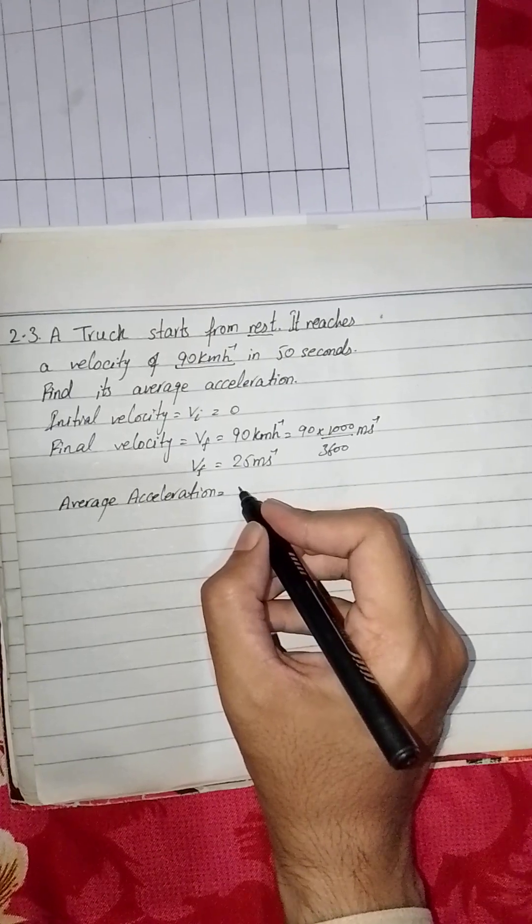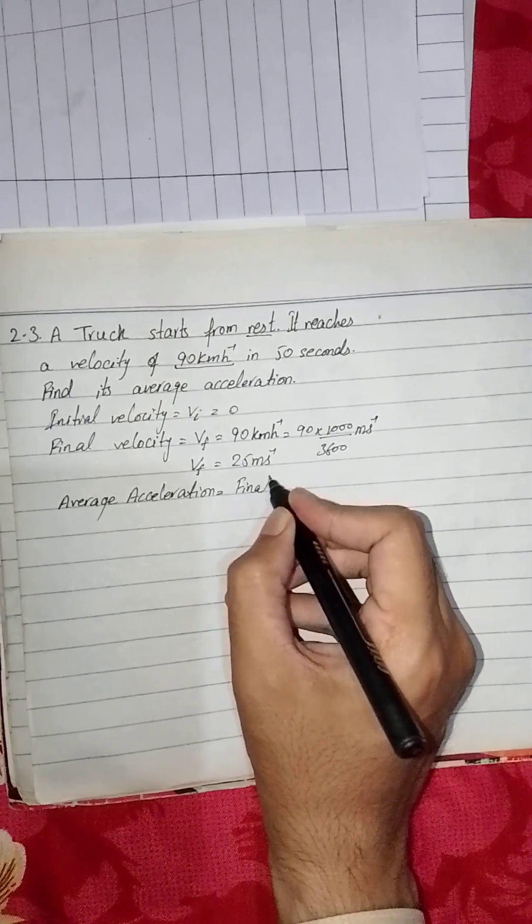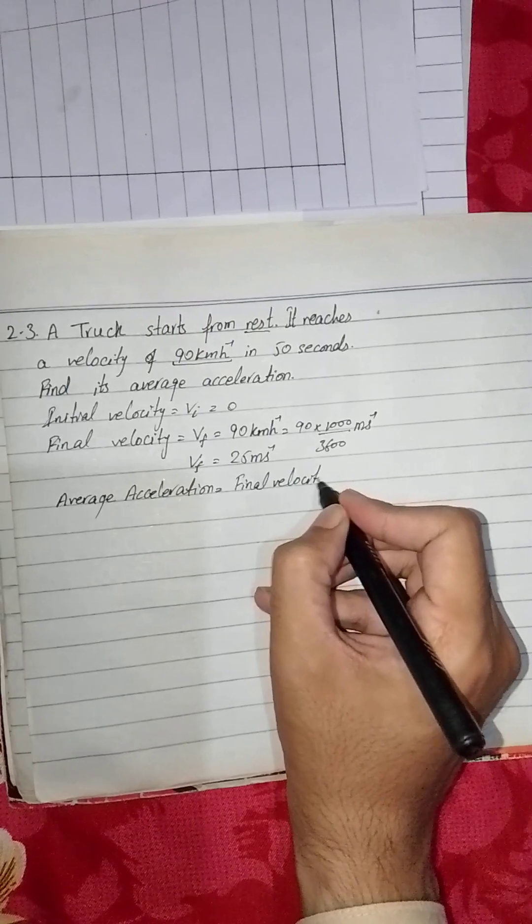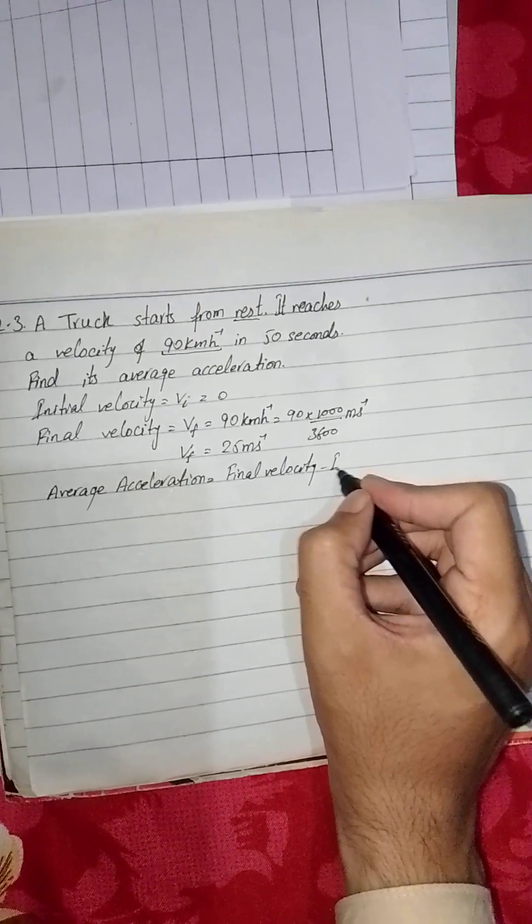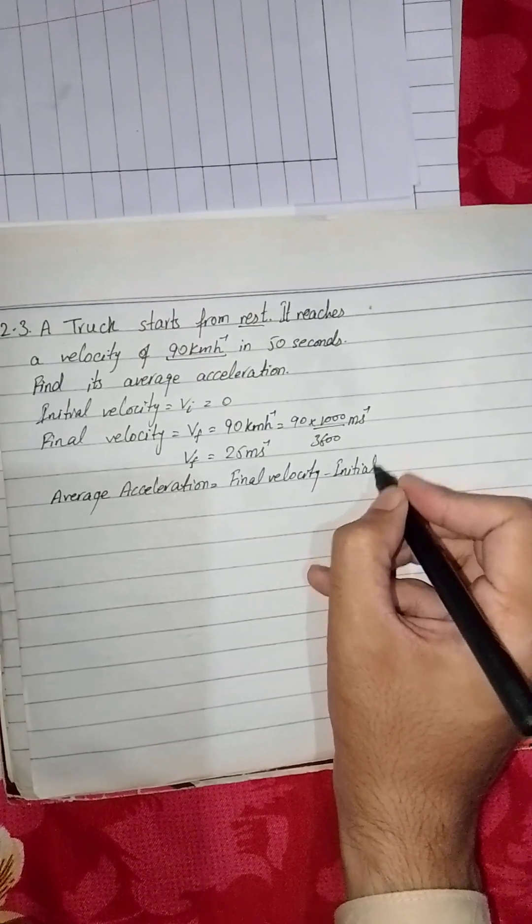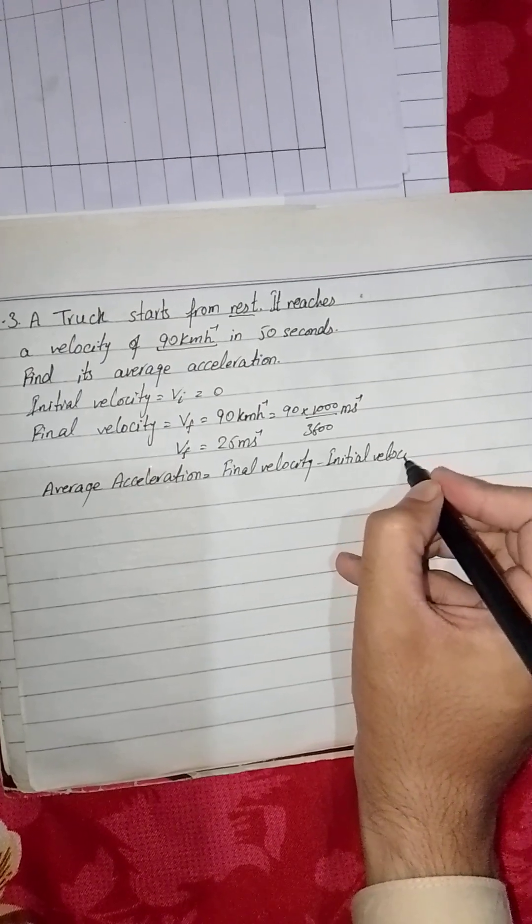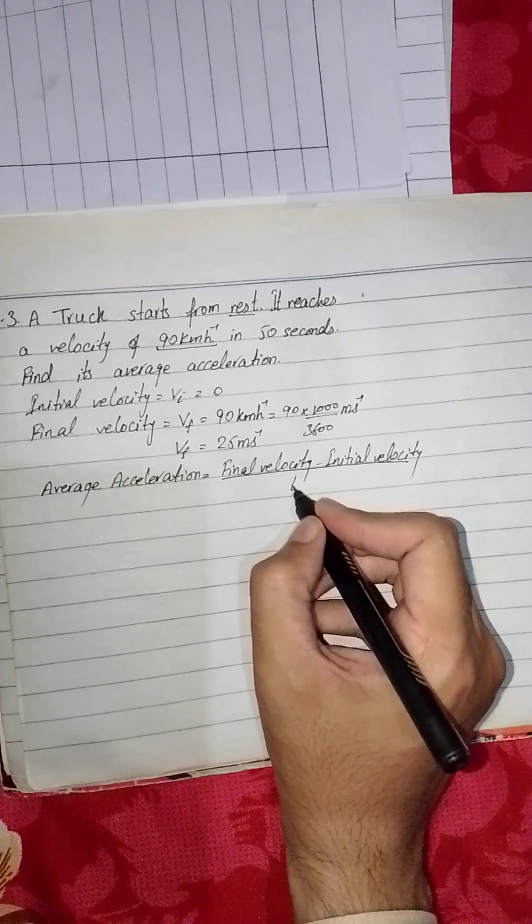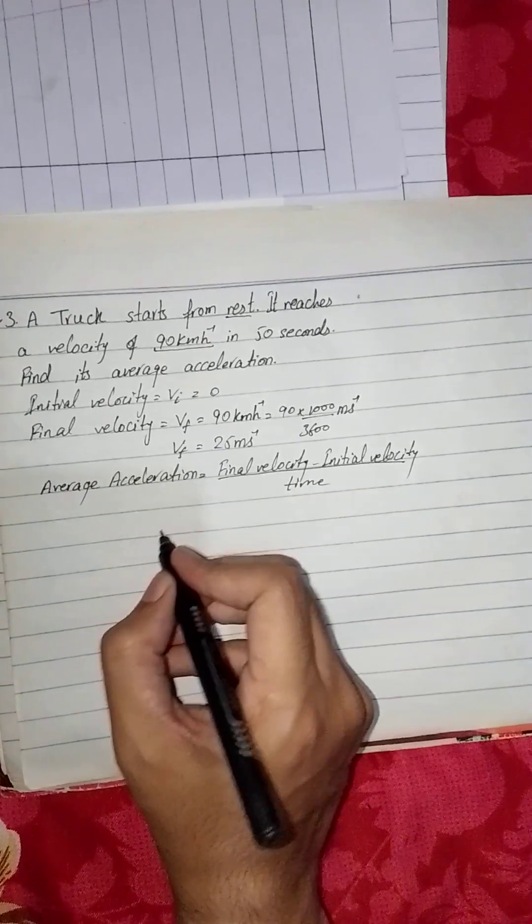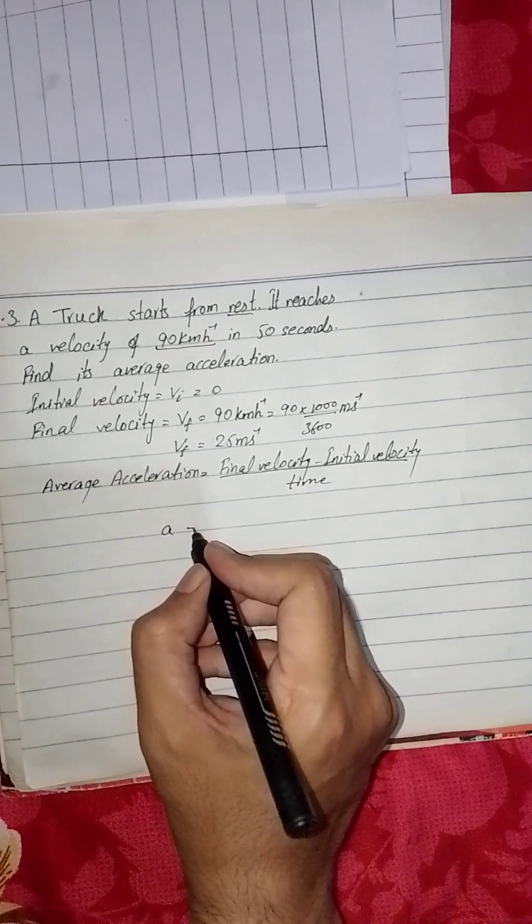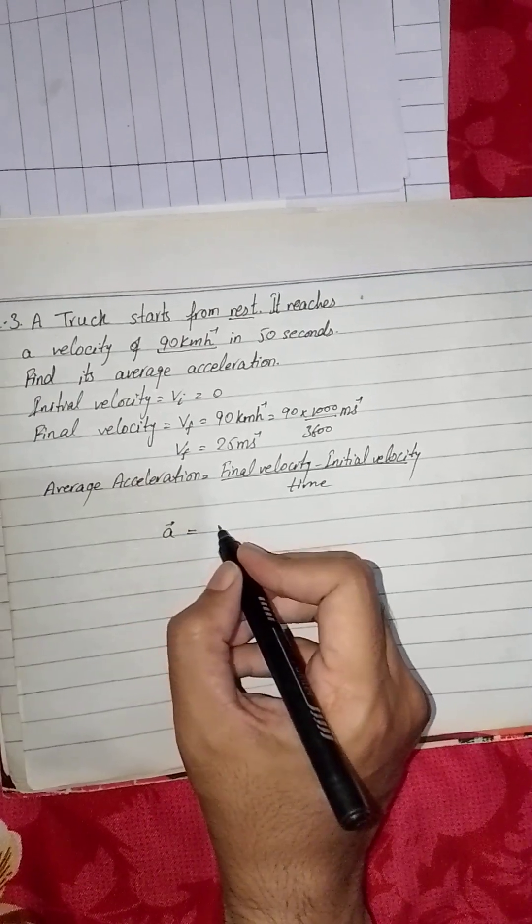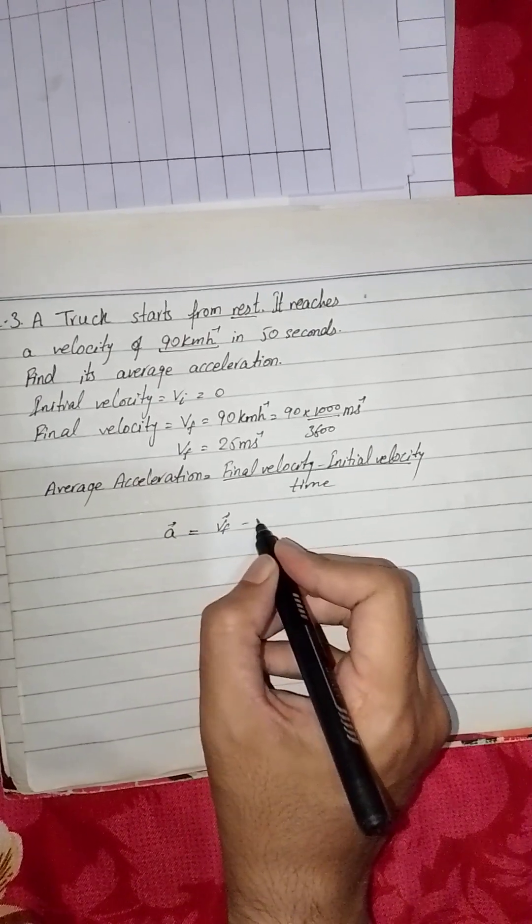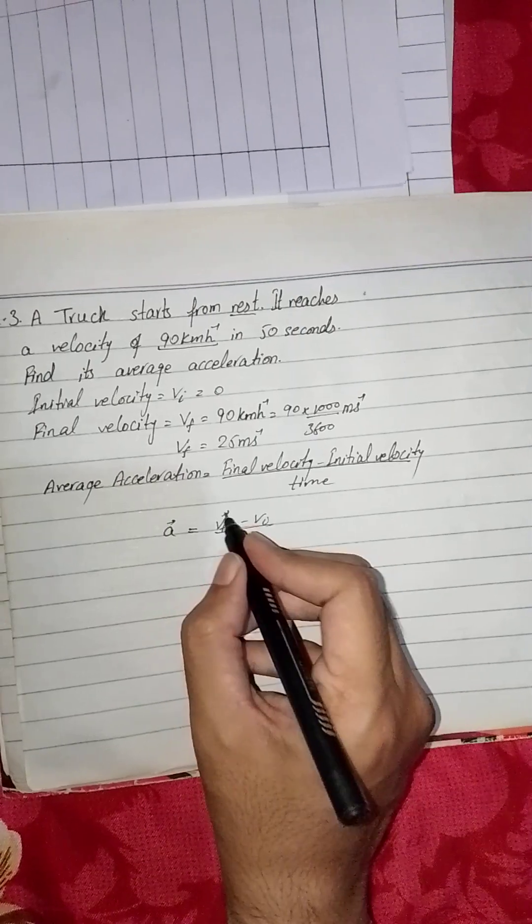So final velocity minus initial velocity divided by time, or we can write it as: acceleration is equal to vf minus vi divided by t.